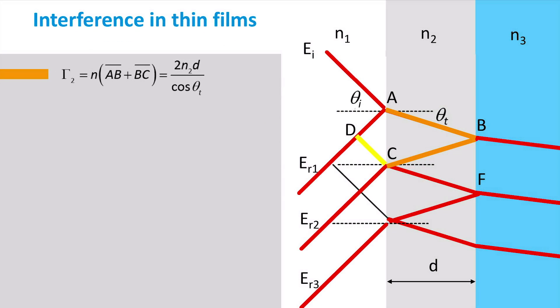To find how the waves interfere we need to look into the optical path length difference. Let's first look at wave 2.